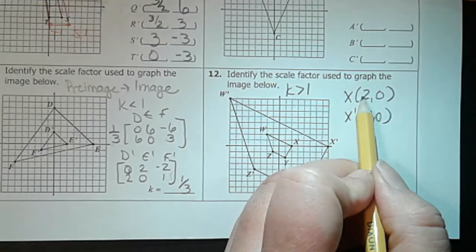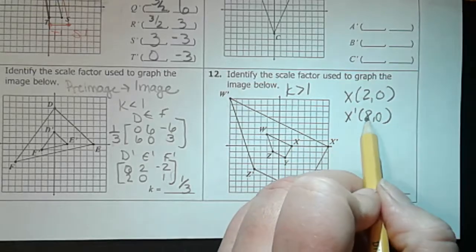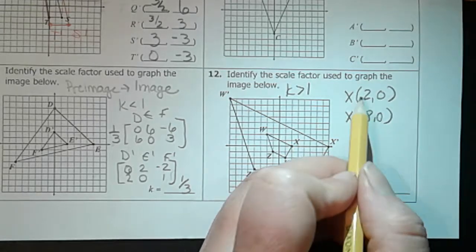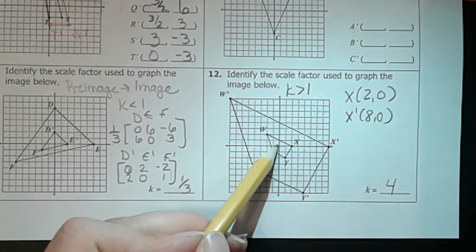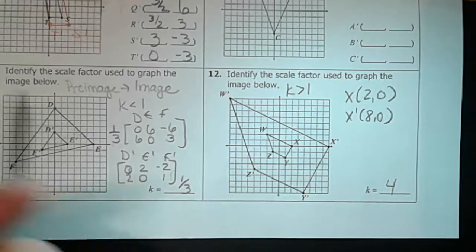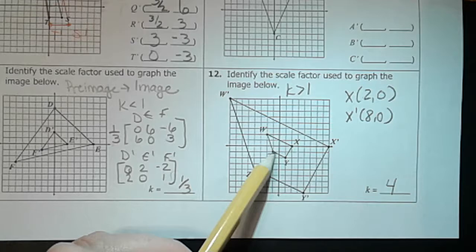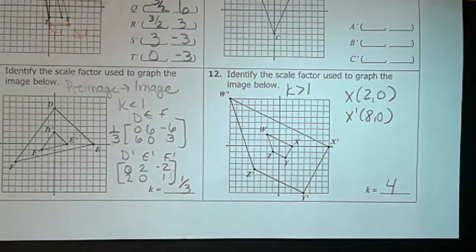So what did we do to get from two, we started at two, to eight? Well, we multiplied by four, so our K value for this one is four, and you could check that with every point. From W to W prime, you just multiplied every value by four. From Z to Z prime, we just multiplied every value by four. But in this case, you don't actually have to check every point. You could just choose one point. So I hope that helps.